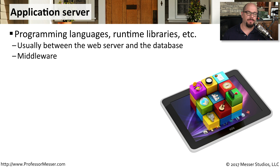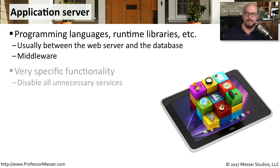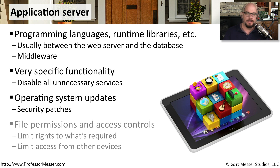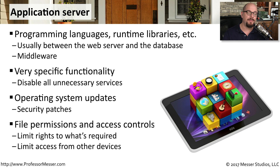In some environments, the entire application flow is handled through multiple tiers. You might have the web server handling the front end, a database server on the back end, and occasionally an application server in the middle providing additional runtime libraries and programming languages — generally sitting between the web server and the back-end database. Because this is in the middle, you'll sometimes hear this referred to as middleware. This application server usually has a very specific function, so if there are any other services running on that device, you can disable those and focus solely on the application services. There might also be operating system updates, so you want to be sure it gets all of the latest patches. You'll also want to limit access controls for both the application server itself and for people accessing it, creating very granular controls over who may be able to access this device.